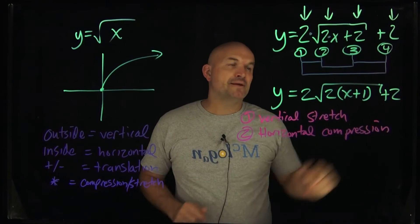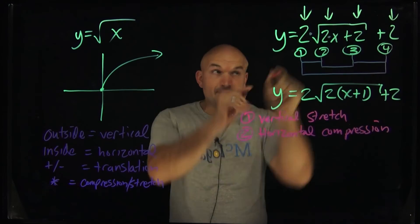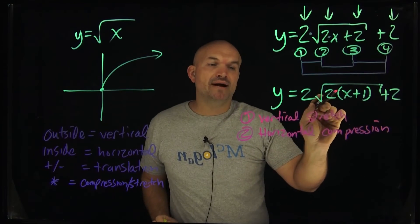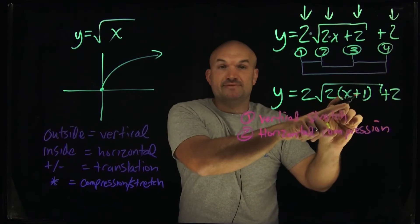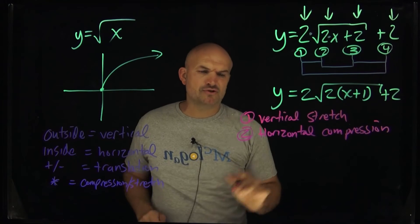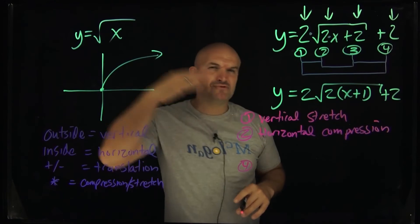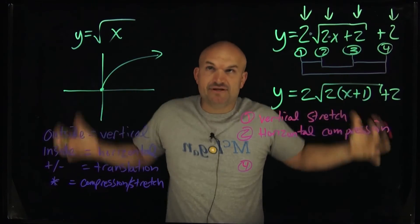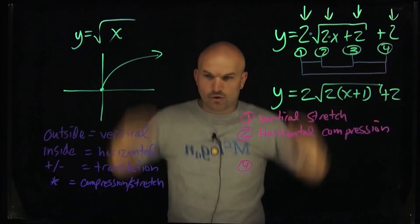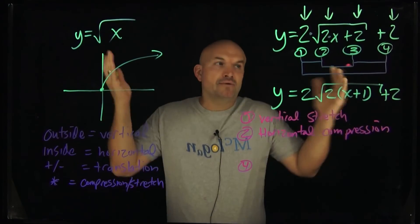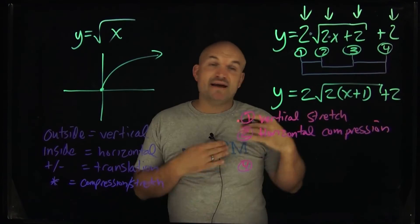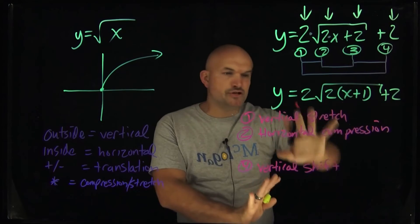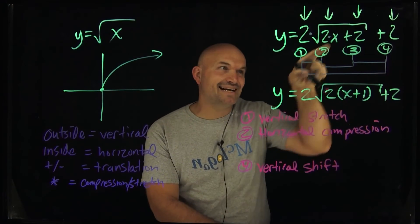Number 3 is still horizontal because it's under the radical, and it's a shift. Remember we had to change this problem by factoring — so it's going to be a shift to the left 1, not 2. Let's also look at number 4: it's outside, so it's vertical, and since it's positive, positive means up. So that's a vertical shift of up 2. The only transformation that ends up being 1 rather than 2 is that inside horizontal shift.